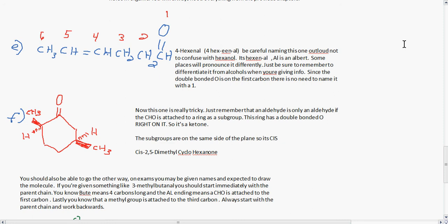F, this one is really tricky. Just remember that an aldehyde is only an aldehyde if the CHO group is attached to a ring as a subgroup. This ring has a double bonded O right on it, so it's a ketone, not an aldehyde. The subgroups are on the same side of the plane, so this is cis. This will be named as cis-2-5-dimethyl-cyclohexane, naming this as your number one carbon.